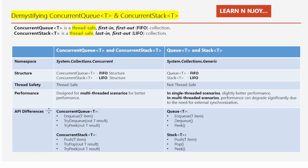Last but not least, we have API differences. ConcurrentQueue<T> has methods like Enqueue(TItem), TryDequeue(out TResult), and TryPeek(out TResult). Enqueue adds an item to the end of the queue. TryDequeue tries to remove and return the item at the beginning of the queue, returning a Boolean indicating success or failure. TryPeek tries to return the item at the beginning of the queue without removing it. Whereas Queue<T> has methods like Enqueue(TItem), Dequeue, and Peek. Dequeue removes and returns the item at the beginning; Peek returns the item without removing it.